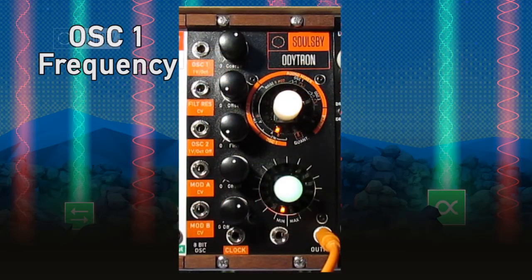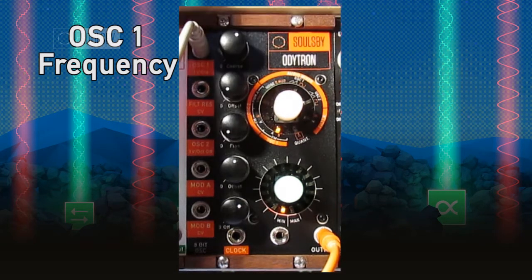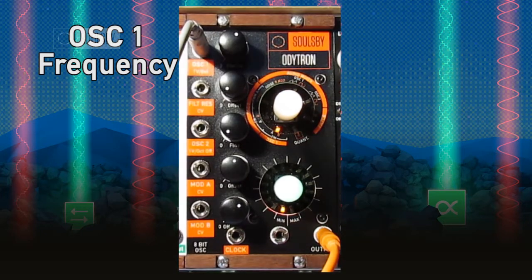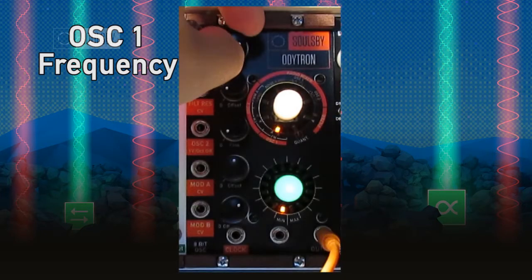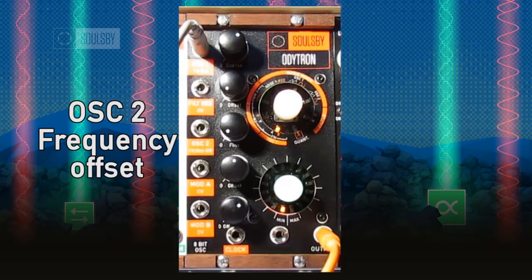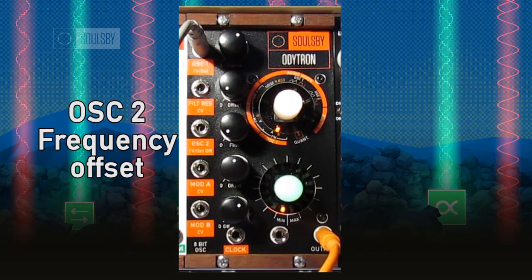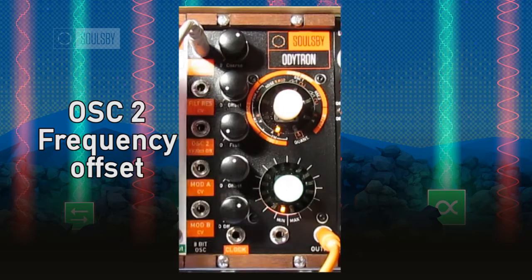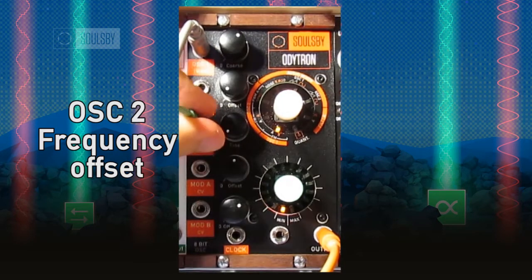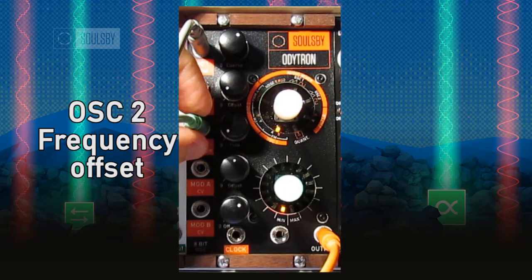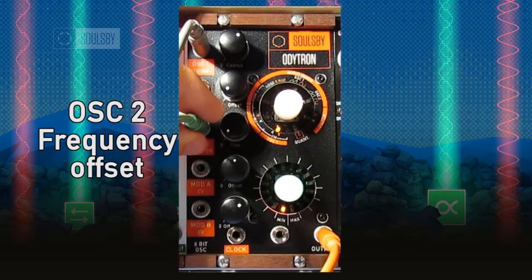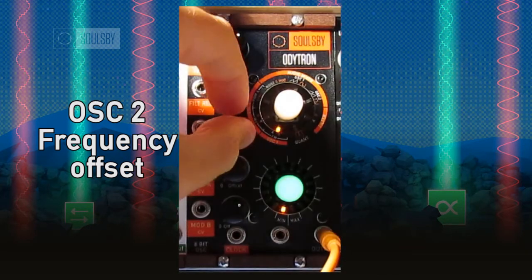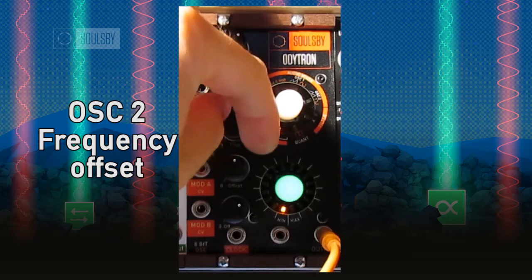The frequency of oscillator 1 is controlled via the volt per octave input and the coarse tune knob. The frequency offset of oscillator 2 with respect to oscillator 1 is controlled via the volt per octave input and the fine tune knob, allowing for warm detuned oscillator sounds.